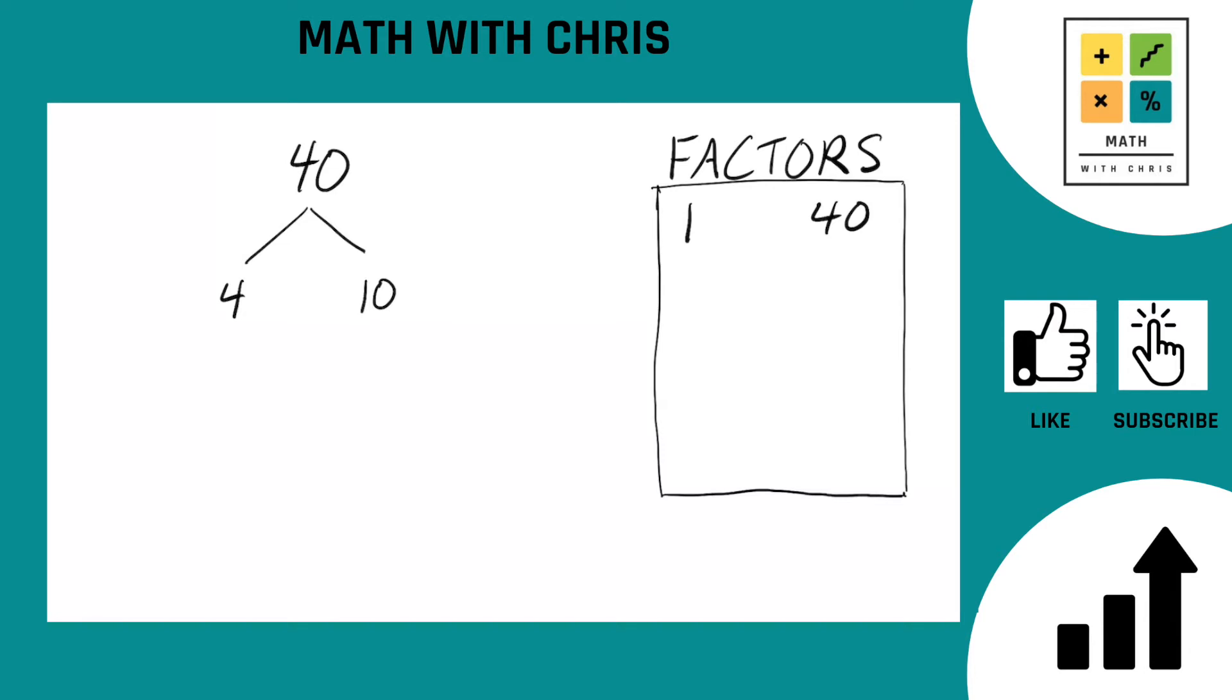Alright, let's take a look at 4. Can 4 be broken down further? Indeed it can. 4 is of course 2 times 2. 2 are prime, so circle that guy, circle that guy. That side of the tree is done. 2 and 2.